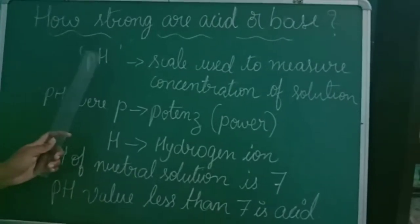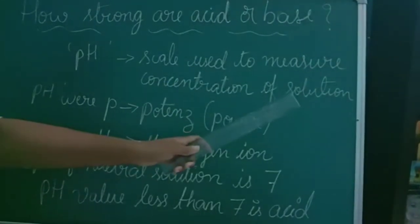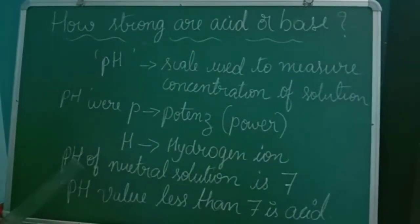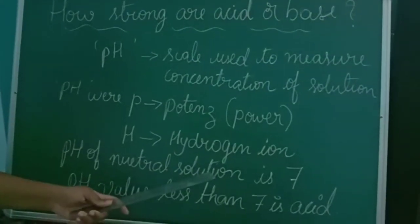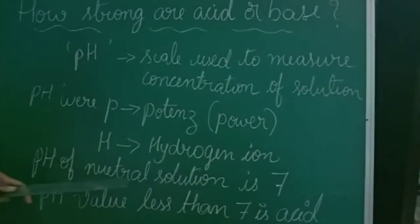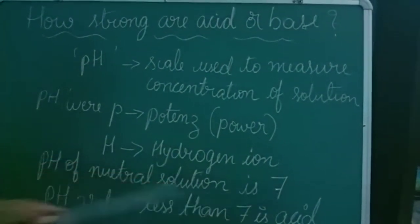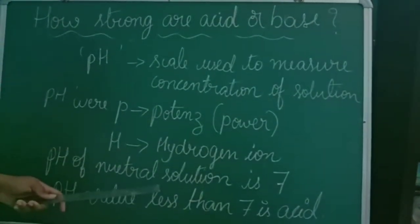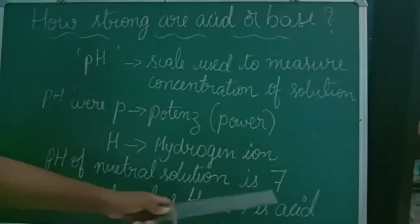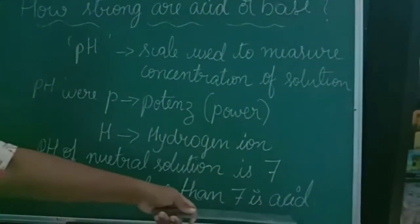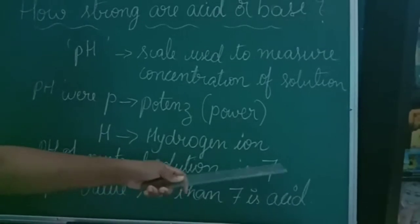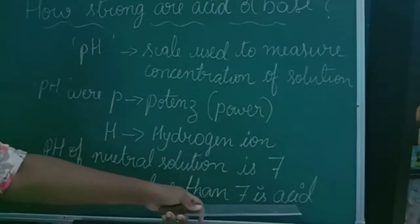The pH scale is used to measure the concentration of solution. Neutral solution means 50% acid and 50% base — such a neutral solution shows a pH value of 7. Always remember: the neutral solution's pH value will always be 7. And whichever solution shows less than 7, that is nothing but an acidic solution — those solutions are acidic solutions.